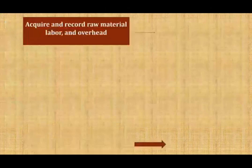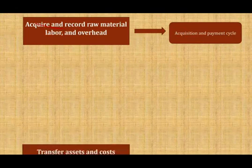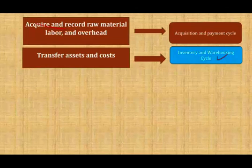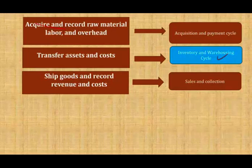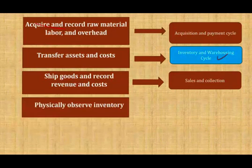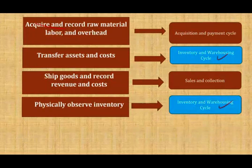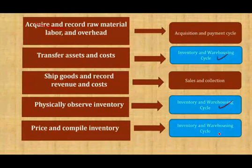So what are the audit inventory cycle? The first one is the acquisition and the payment when we acquire the inventory. The second one is the transfer of assets, which we already worked on in this module — inventory and warehousing cycle. The third is shipping goods and recording revenue once we sell it, which is part of the sales and collection. The fourth is physical inventory observation, which we already covered. And the fifth and last one is price and compile inventory, which we will cover in this session.